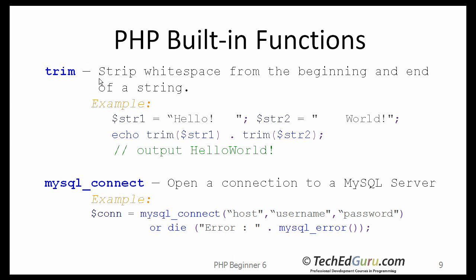Trim will remove the leading and trailing characters at the beginning and end of a string. For example, str1 contains trailing characters and str2 contains some leading spaces that we would like to remove. After calling the trim function and printing the result, you simply get 'hello world' without any trailing or leading spaces that existed in the original variables.